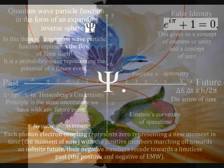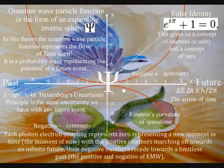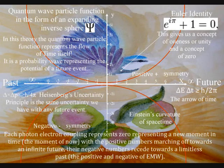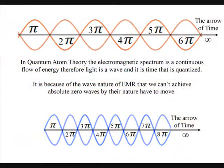This has gauge symmetry, and we can re-gauge each new photon at zero, representing a new moment in time, the moment of now, with the positive numbers marching off towards an infinite future, the negative numbers receding towards the limitless past, the positive and negative of electromagnetic waves.